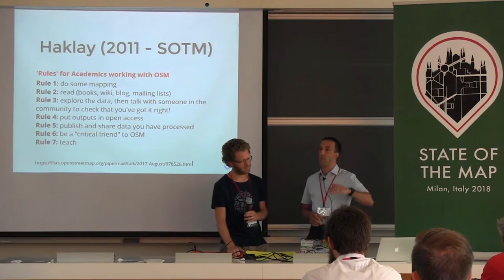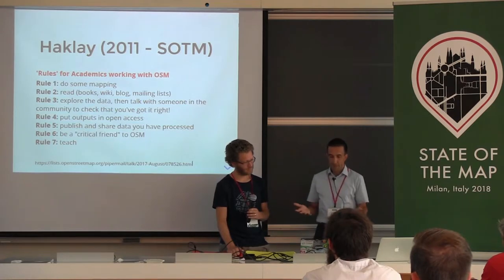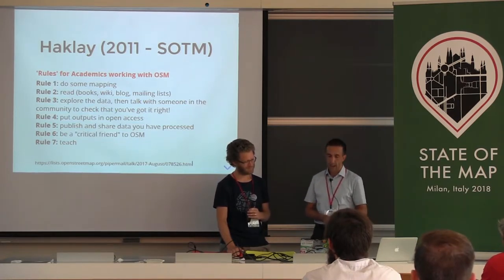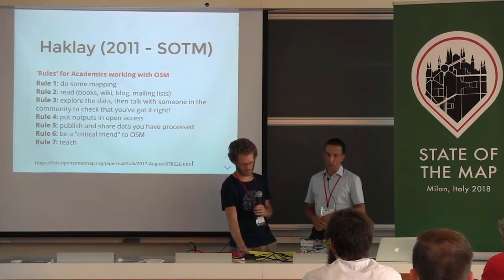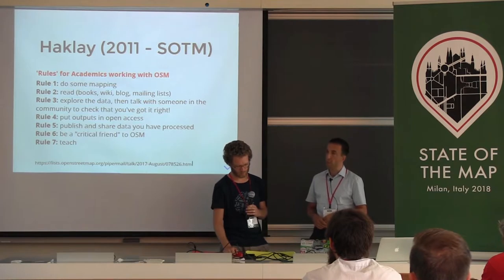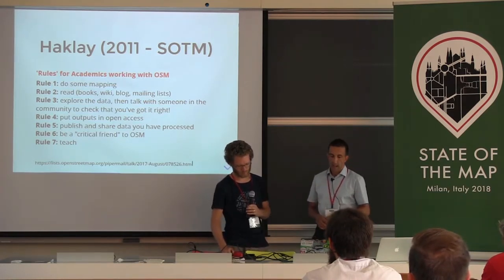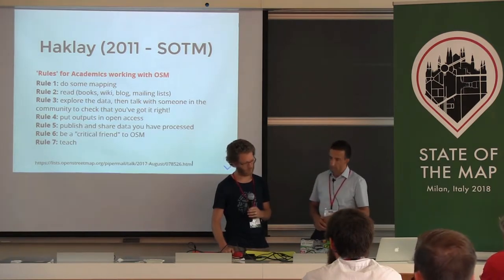Mucky Hackley suggested a seven-step rule for academics working with OSM, and as our parents would say, it's as true today as it was then. Academics should try to do some mapping; they should try to read the content produced by the community; explore the data and be a user of it; try to put outputs in open access so anyone can access them; publish and share data that you've processed, which supports reproducible science; and be a critical friend to OSM — it's okay to say you could improve X or Y, but demonstrate the rationale behind it.